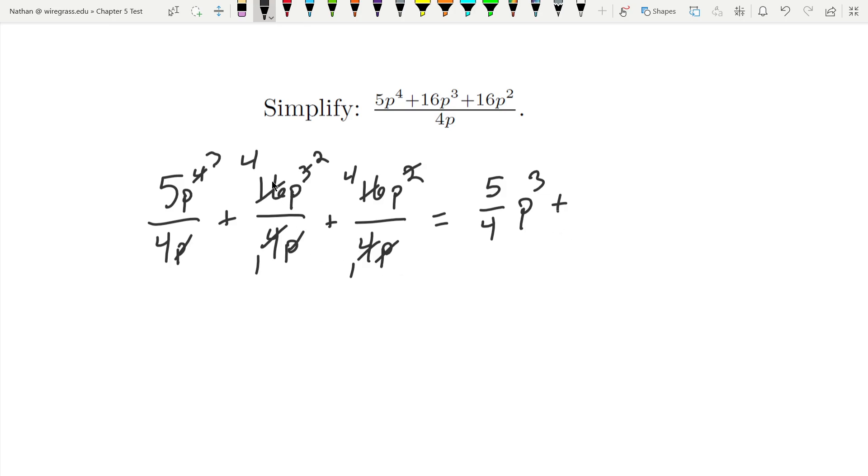Plus here we have 4p^2, and this final one we have 4p. And that is simplified.